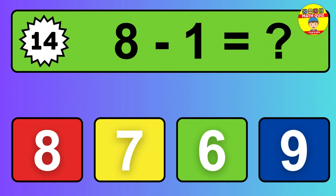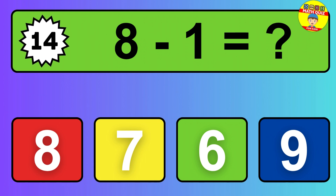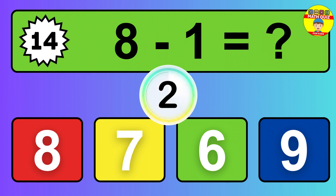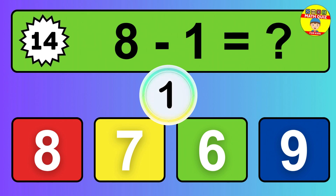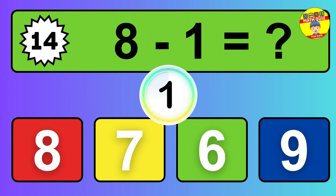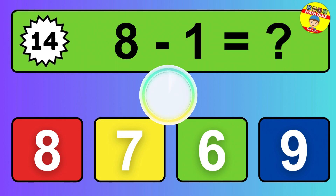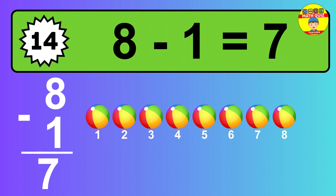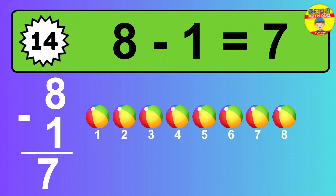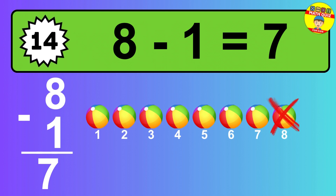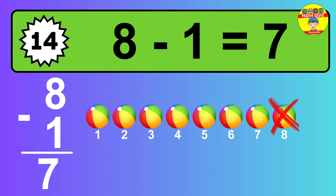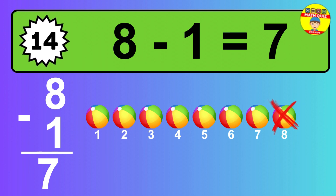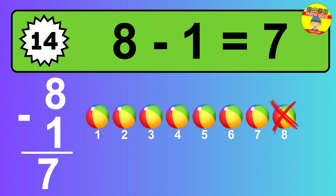Question 14. 8 minus 1 equals what? The answer is 8 minus 1 is 7. Let's count it. 1, 2, 3, 4, 5, 6, 7.